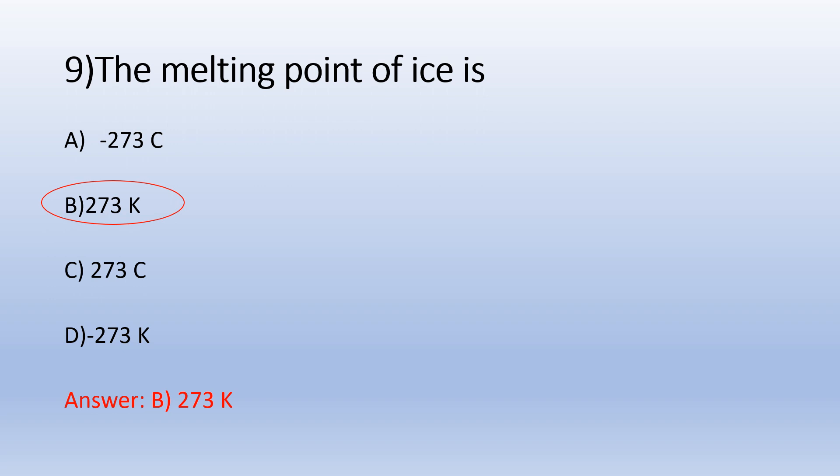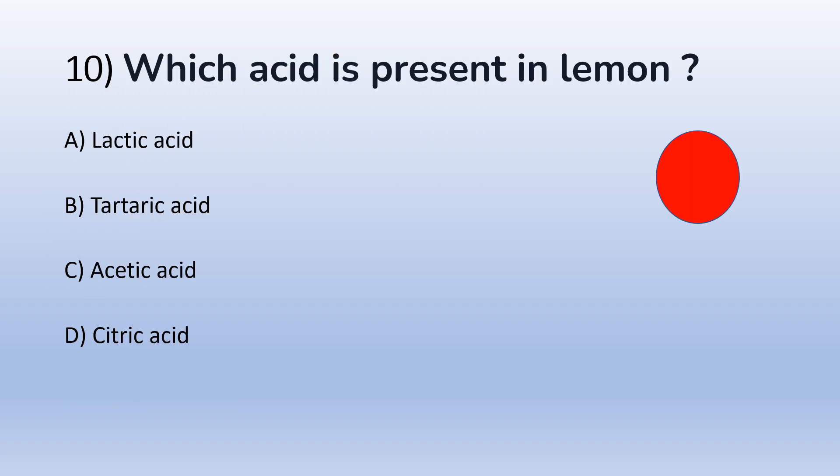So if you are asked to find out boiling point of water, which you know is 100 degree Celsius, just add 273, which becomes 373. So the boiling point of water is 373 Kelvin. We'll move on to the next question. Question number 10: Which acid is present in lemon? A) Lactic acid, B) Tartaric acid, C) Acetic acid, and D) Citric acid.